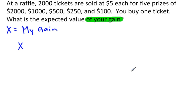Well let's see what could happen here. What are all the different outcomes for my gain? Well, I've spent $5 and I could lose. In fact, there's a pretty good chance that I'm going to lose. So my gain could be negative $5, because if I buy a ticket and I do not win, my gain was negative 5. But if I buy a ticket and I win the $100 prize, my gain is $95. If I buy a ticket and I win the $250 prize, my gain is $245.